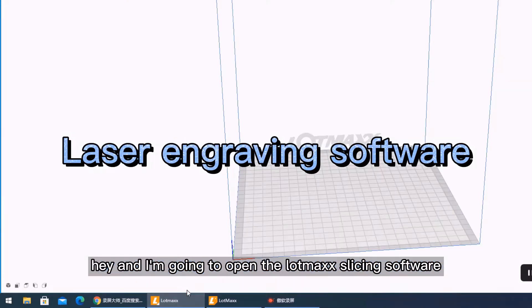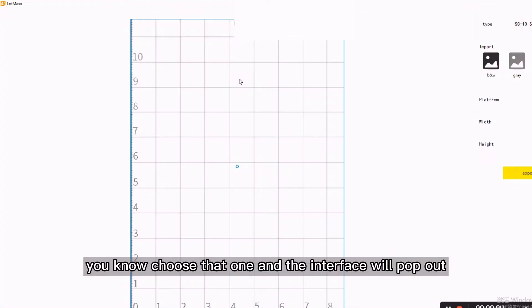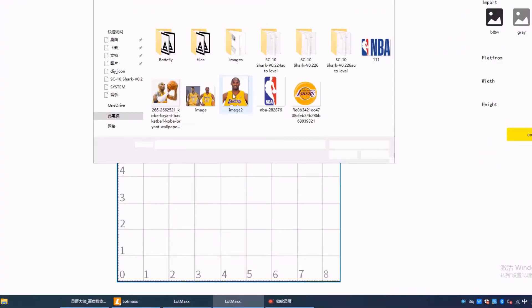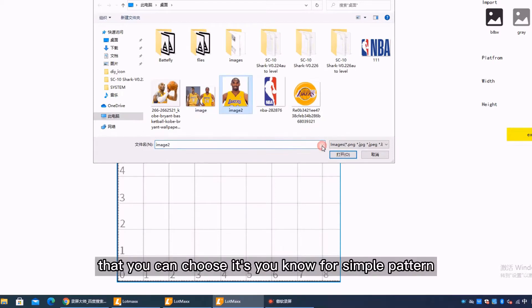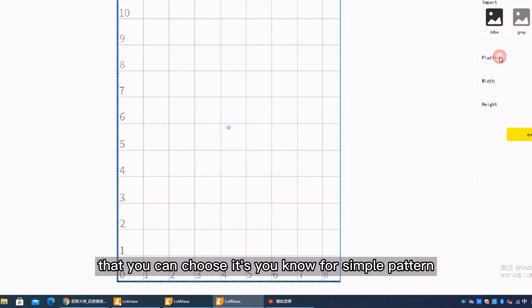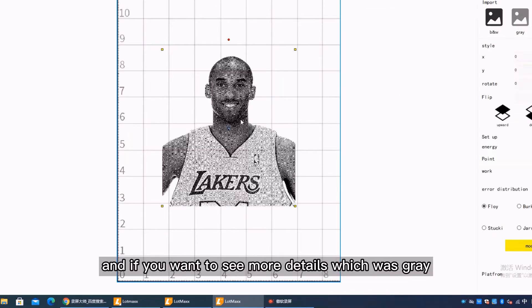I'm going to open the Lomax licensing software. In the menu you have laser mode, and the interface will pop out. You have these BMW modes that you can choose. For simple items it's going to be alright, and if you want to see more details which was great.